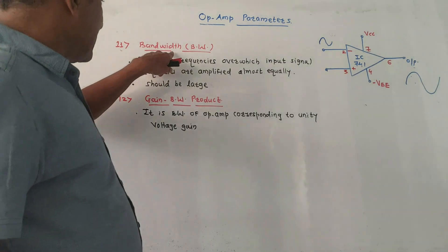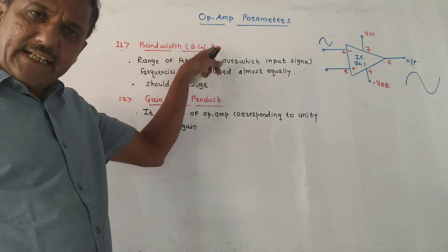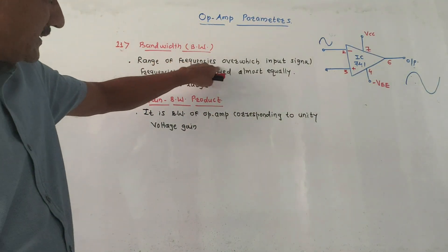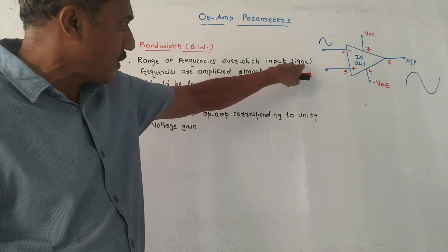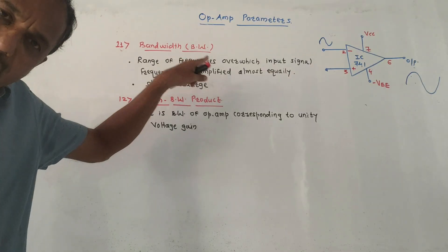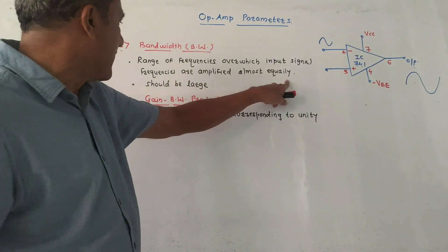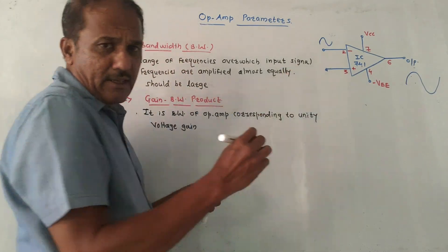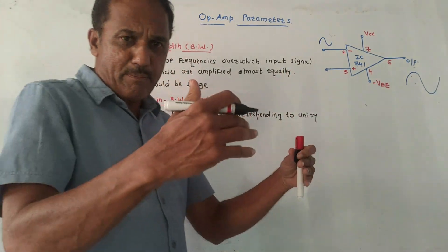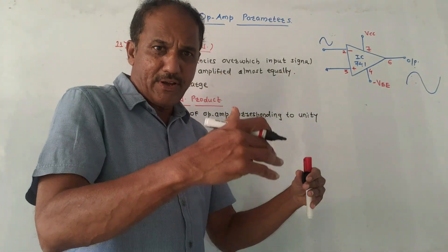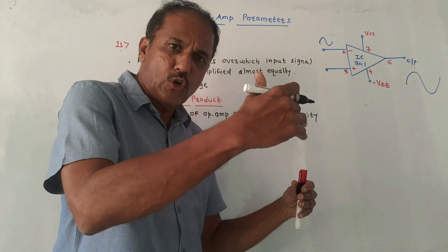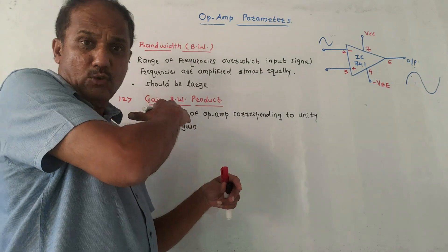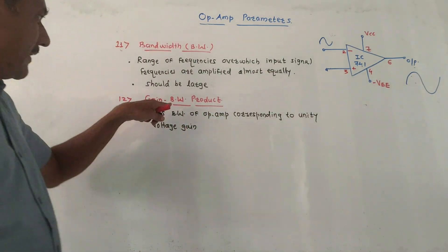The remaining parameters: bandwidth means the range of frequencies over which input signal frequencies are amplified almost equally. The bandwidth should be as large as possible, meaning the op-amp should ideally amplify signals from 0 to infinity, with gain remaining constant throughout the bandwidth.